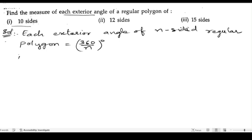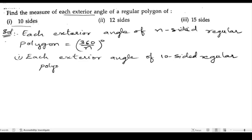Let us solve the first bit. Each exterior angle of a 10-sided regular polygon is 360 by 10. Zero zero cancel, so we will get 36 degrees. Now second bit.